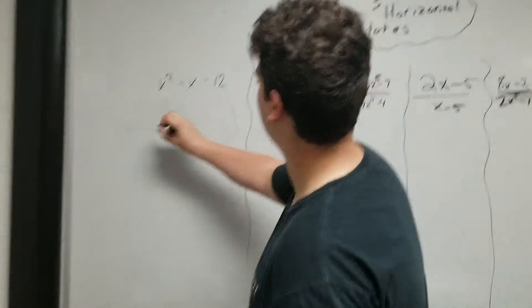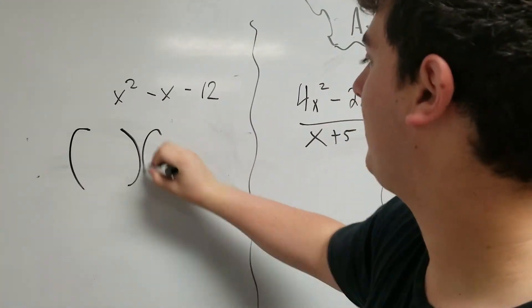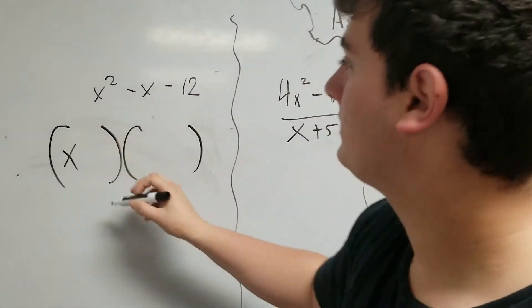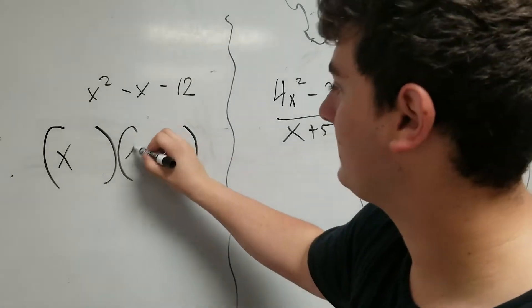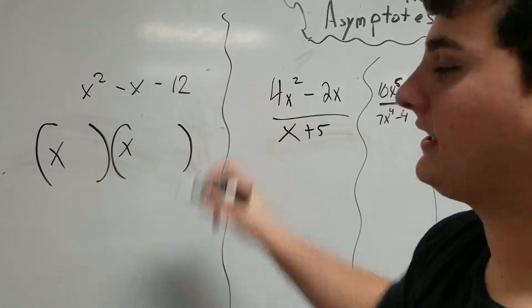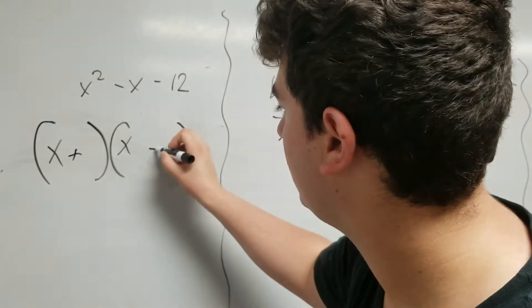We're going to start with our first vertical asymptote. We're going to factor the equation. Since there's x squared, we're going to have two x's normally. I see a negative 12, so I'm going to have a positive somewhere and a negative.